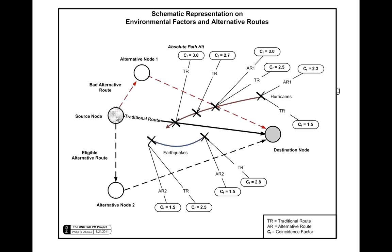This is a schematic representation of how a path is rejected even as being an alternative one, from source node shipping goods to its destination node. As we can see, the upper triangle is rejected since the coincidence factor for a hurricane intersecting the path is high. But once it passes, the value reduces.